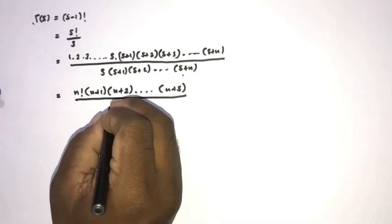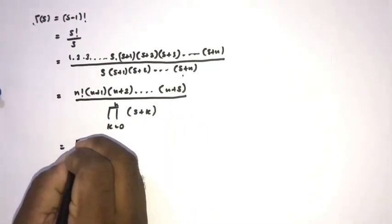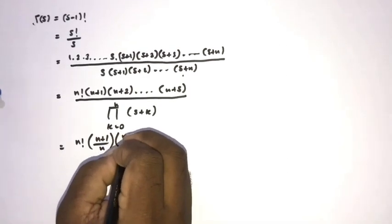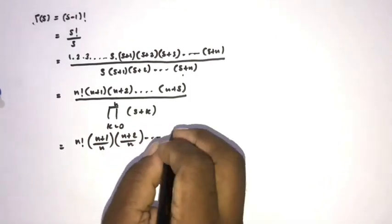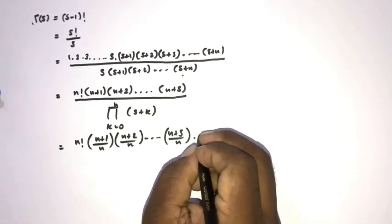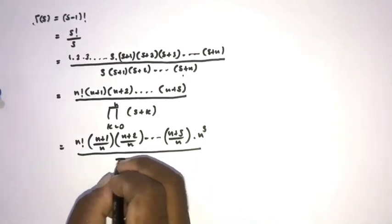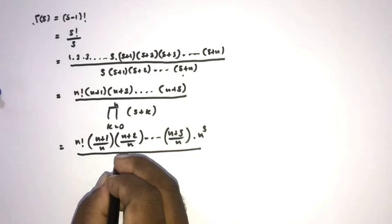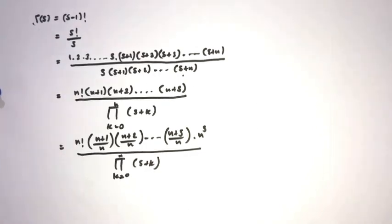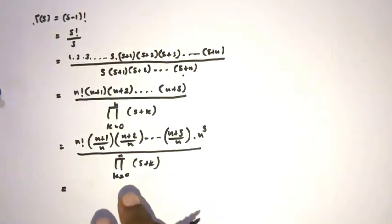We can write the numerator as n! times (n+1)(n+2)···(n+s), and the denominator as the product from k equals 0 to n of (s+k). Then, dividing each factor in (n+1)(n+2)···(n+s) by n, we multiply by n^s in the numerator, giving n! · n^s over the product from k equals 0 to n of (s+k).